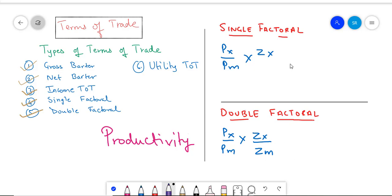An increase in the single factorial terms of trade indicates that a country is able to import greater quantity of goods per unit than the factor inputs it has used in the production of all the exportables.